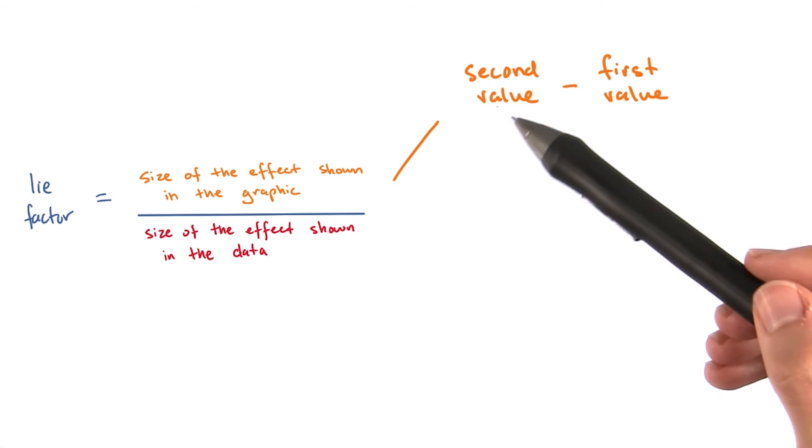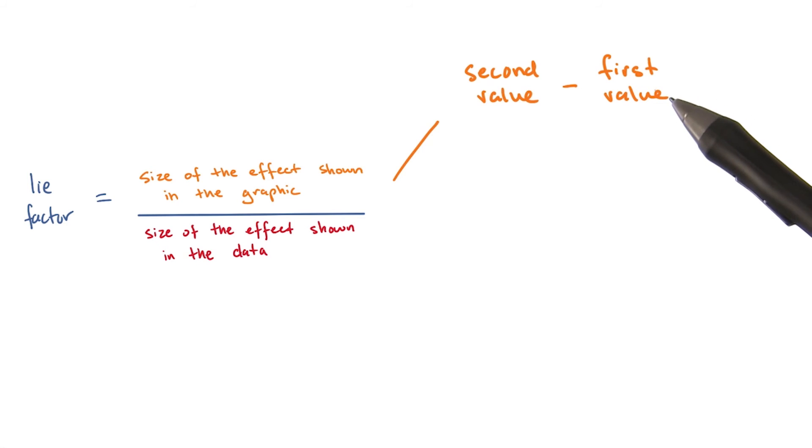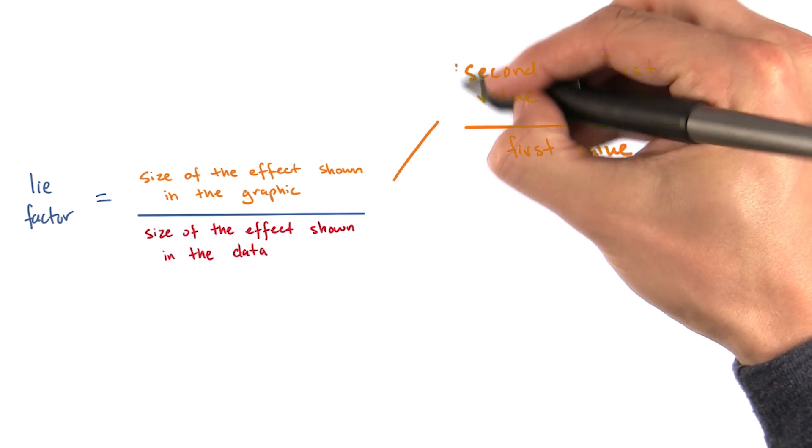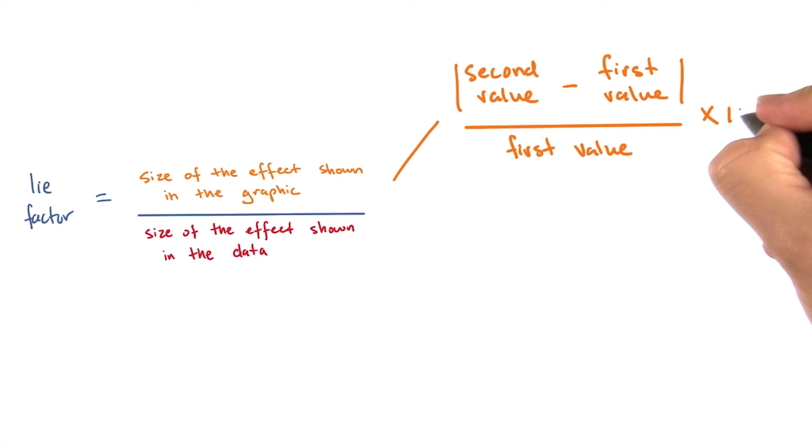First, we find the difference by subtracting the second value from the first value seen in the graphic. Then we compute the change by dividing by the first value. We add absolute value bars to account for negative change. Multiplying this by 100 gives us the change as a percentage.